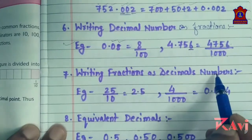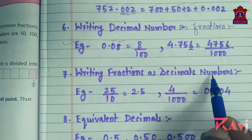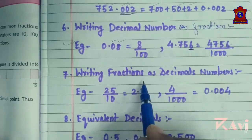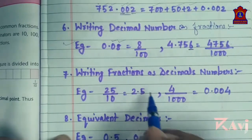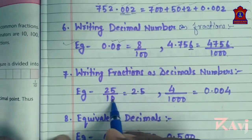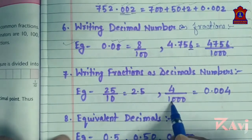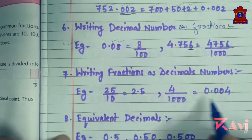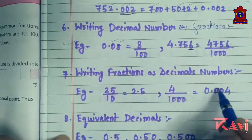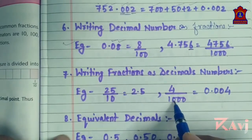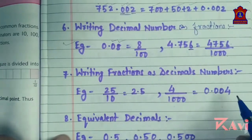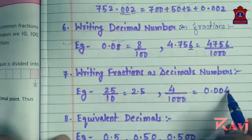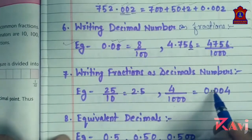Next, seventh, is writing fractions as decimal numbers. Write the digits of the numerator and put the decimal point such that there are as many decimal places as there are 0s in the denominator. For example, 25/10 — there is 1 zero, so put the decimal before 1 digit: 2.5. For 4/1000, there are 3 zeros. Write the digit 4, add zeros to fill: 0.004. Alternatively, 4 is at the thousandths place, so tenths is 0, hundredths is 0, thousandths is 4 — giving 0.004.